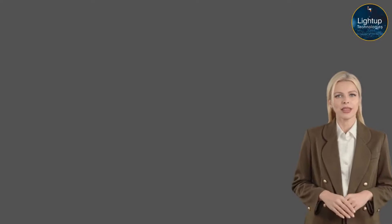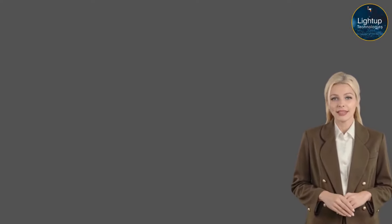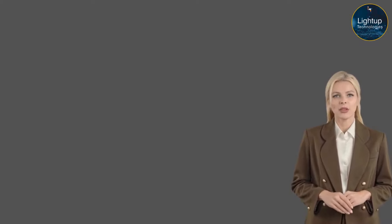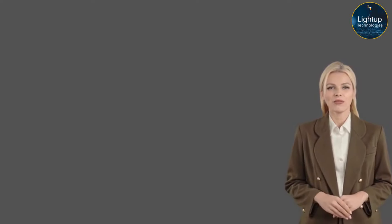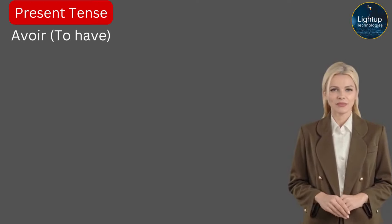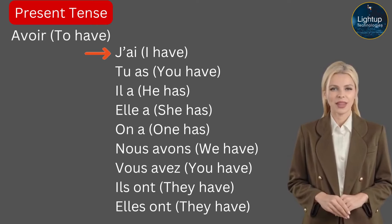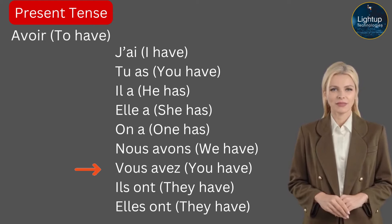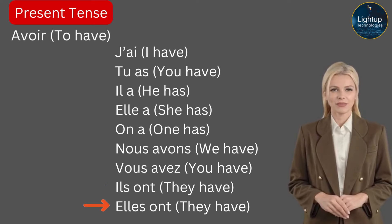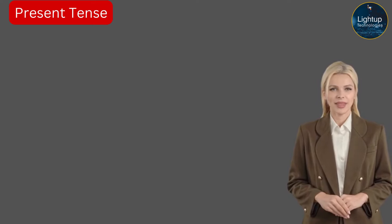First, have a look at the auxiliary verbs avoir or être in present tense — that's what we need to form the passé composé. Let's conjugate the verb avoir in the present tense: j'ai (I have), tu as (you have), il a (he has), elle a (she has), on a (one has), nous avons (we have), vous avez (you have), ils ont (they have), elles ont (they have). Without this you don't have past tense.